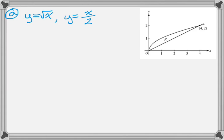So y equals radical x and y equals x over 2. If you look at the figure you can tell that y equals radical x is actually the top curve and x over 2 is the bottom curve, and the first question is to find the area of the region R.